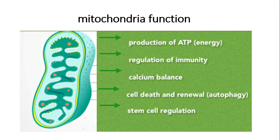Mitochondria also helps in regulation of immunity. Because of its large surface area and involvement in chemical reactions, it maintains calcium balance in the cell. It is also involved in cell death and renewal — a process called autophagy — and plays a role in stem cell regulation. These are important functions for competitive exams at higher levels.